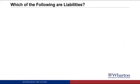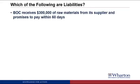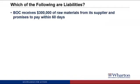We're going to do the same exercise now with liabilities. First item: BOC receives $300,000 of raw materials from a supplier and promises to pay within 60 days. This will be a liability — we're going to call it accounts payable, which we use anytime we owe money to a supplier. It meets the first criteria because we got the benefit of raw materials in a transaction which creates the obligation to pay our supplier. The amount is reasonably certain at $300,000 from the invoice.